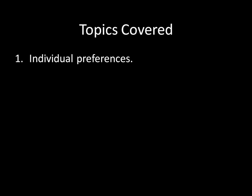Once we have individual preferences covered, we can then move on to more interesting subjects. For example, we can talk about aggregating preferences. Rather than looking at one individual, suppose we have a group of individuals with various preferences. Can we take those preferences, do some sort of method of calculation, and express a group preference? We're going to be struggling with that mightily because, ultimately, you really can't — and you'll learn all about it in that second unit.